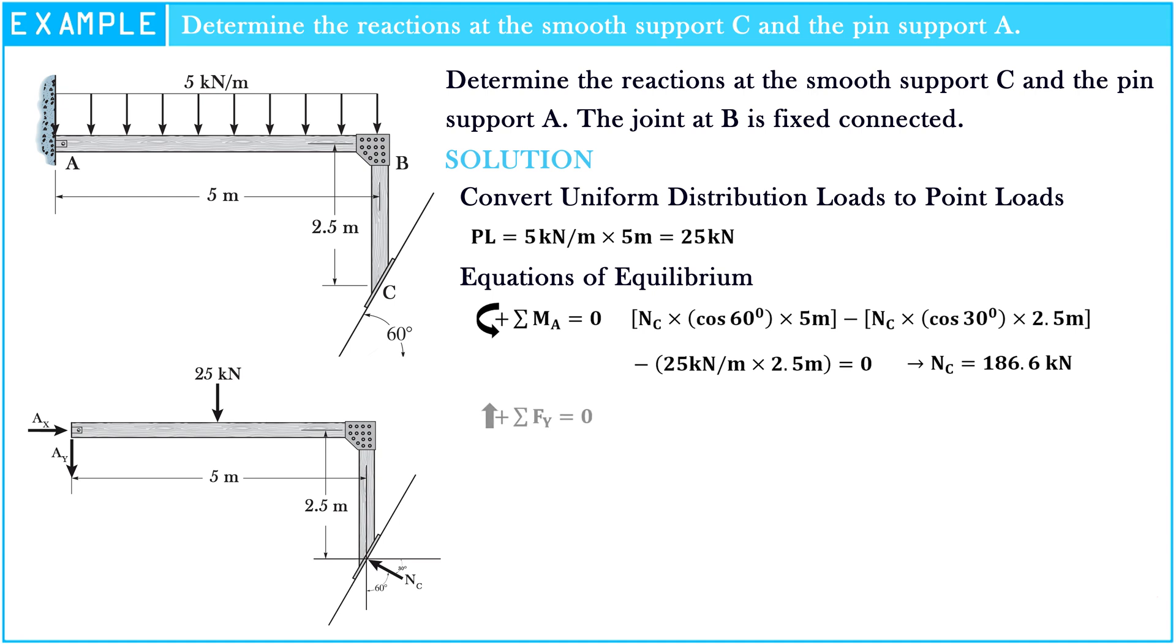The sigma of force along Y axis equals zero. Nc times cosine 60 degrees minus 25 kN minus Ay equals zero. Hence, Ay equals 63.3 kN.